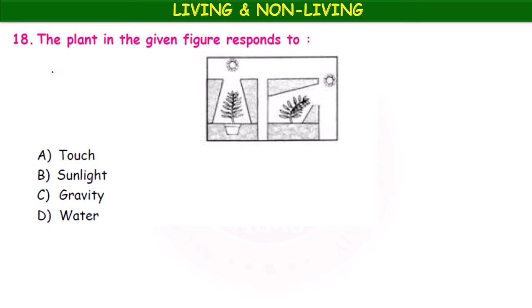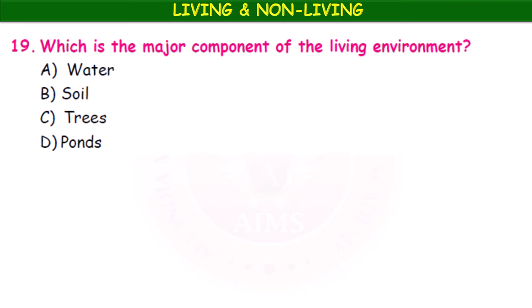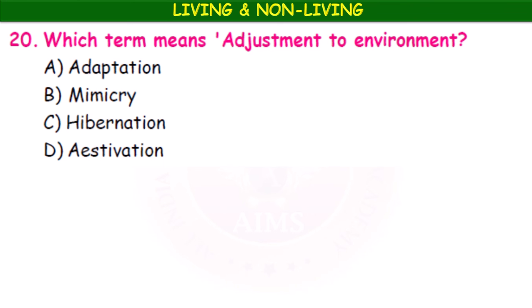In the diagrammatic representation, the plant responds to sunlight. Which is the major component of the living environment — water, soil, trees, or ponds? Trees are the major component of the living environment.